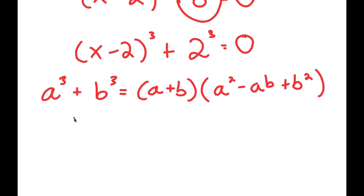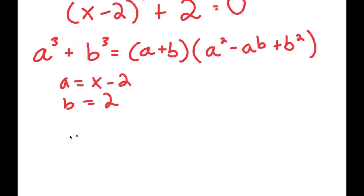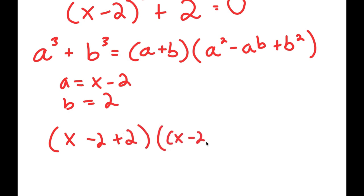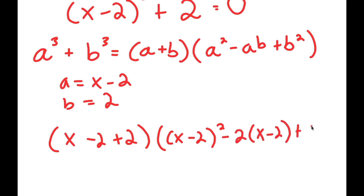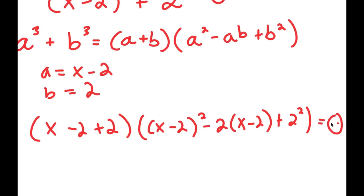So in this case, a is equal to x minus 2 and b is equal to 2. So I get (x minus 2 plus 2) times ((x minus 2) squared minus 2 times (x minus 2) plus 2 squared) is equal to 0.